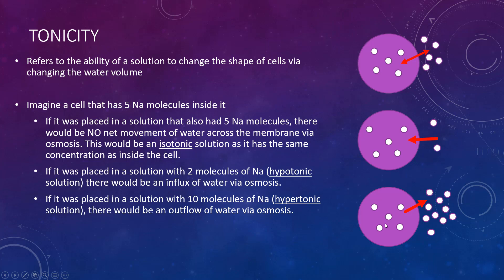If we do the opposite and put that same cell with five sodium ions into a solution that has a higher concentration — say 10 sodium molecules — that would be called a hypertonic solution. You would get a net movement of water moving out via osmosis, from the higher concentration of water inside the cell to the lower concentration of water in the solution. This solution would be hypertonic, and the cell would start to shrink because it's losing water.